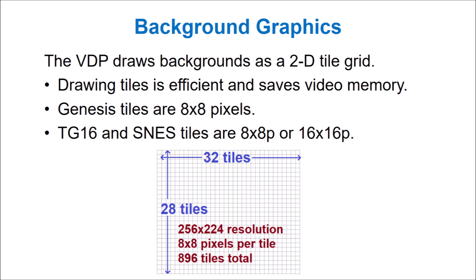Background graphics are drawn as a rectangular grid of tiles. Tiles are square blocks, typically 8x8 pixels, although the Super Nintendo and TurboGrafx also supported 16x16 tiles. This subdivides the screen into many smaller blocks. For a typical Super Nintendo game having a screen resolution of 256x224 pixels, there would be 32 horizontal and 28 vertical 8x8 tiles, amounting to 896 total tiles on screen.